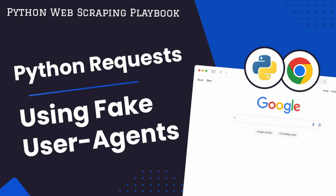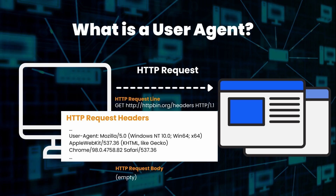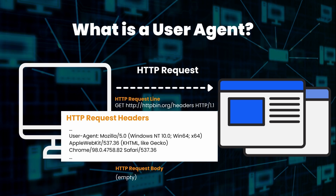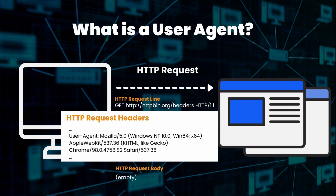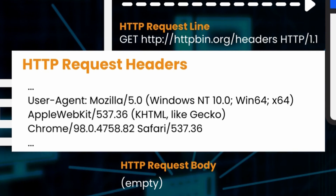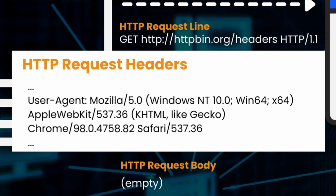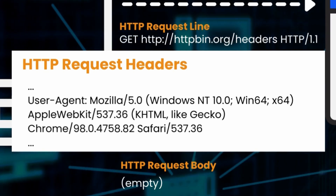User agents are strings that let the website you're scraping identify the application, operating system, browser, etc. of the user sending a request. They are sent to the server as part of the request headers. Here is an example of a user agent sent when you visit a website on a Chrome browser. When scraping a website, you also need to set user agents on every request, as otherwise the website may block your requests because it knows you aren't a real user.